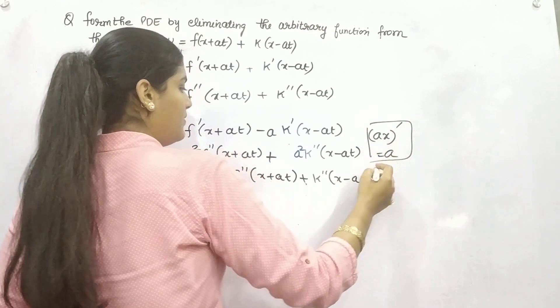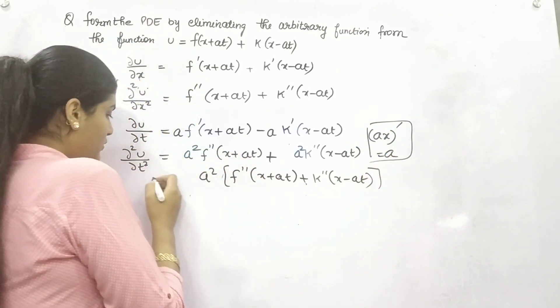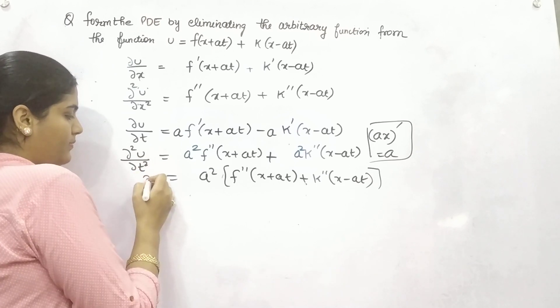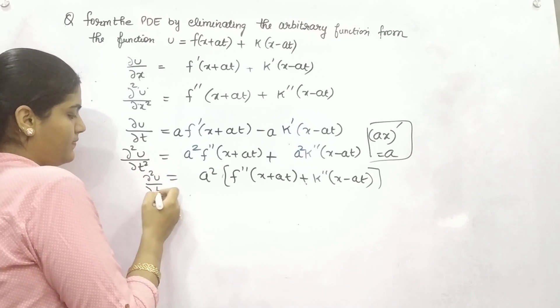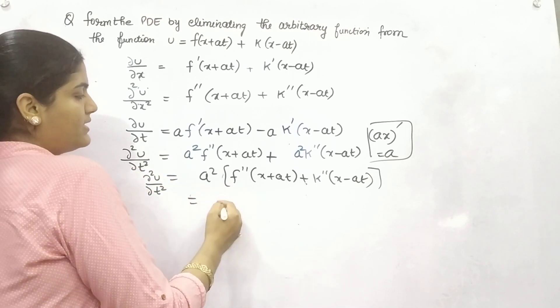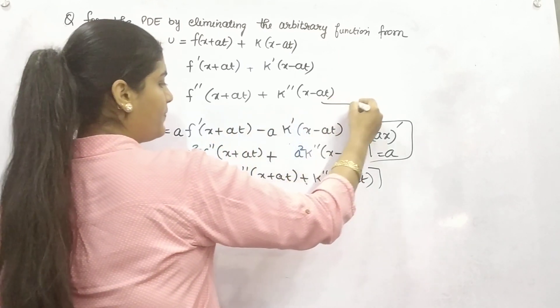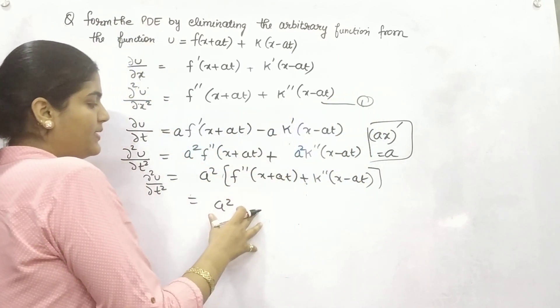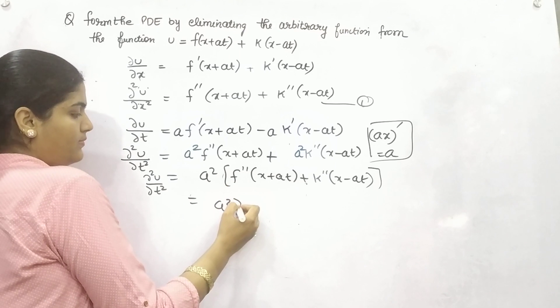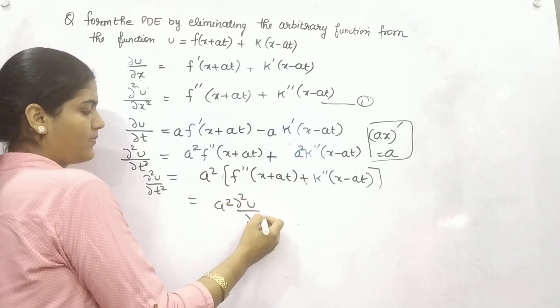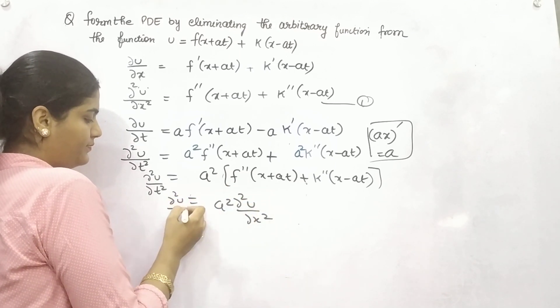So what is it? This is your ∂²u/∂x², right? So the final form equals a² times ∂²u/∂x².